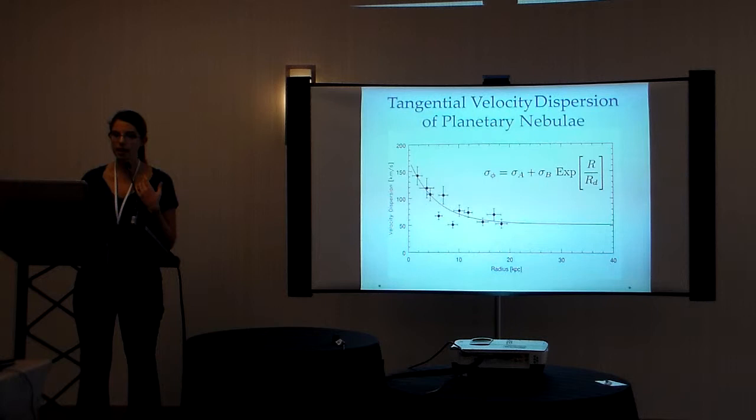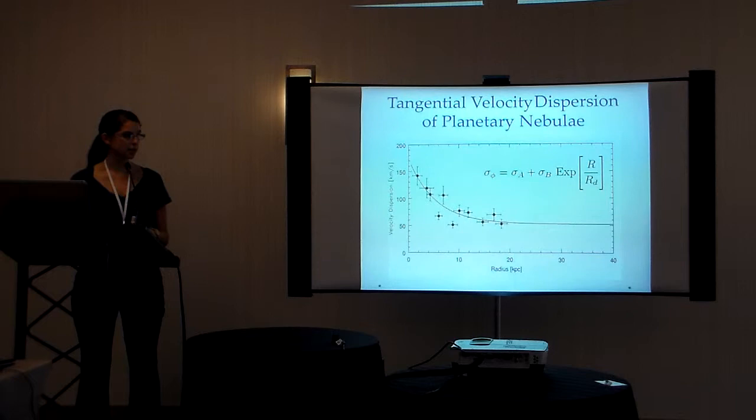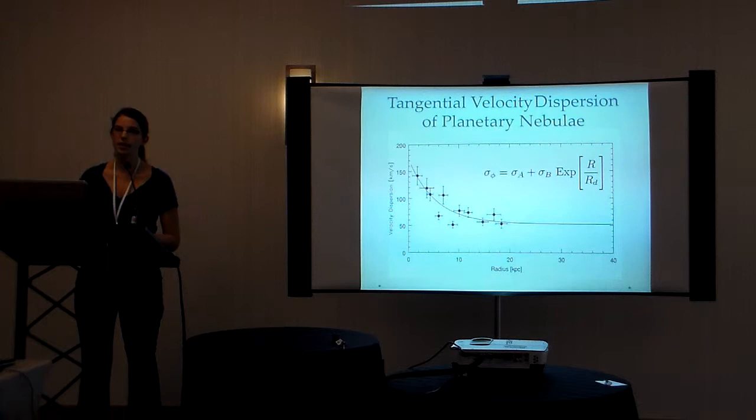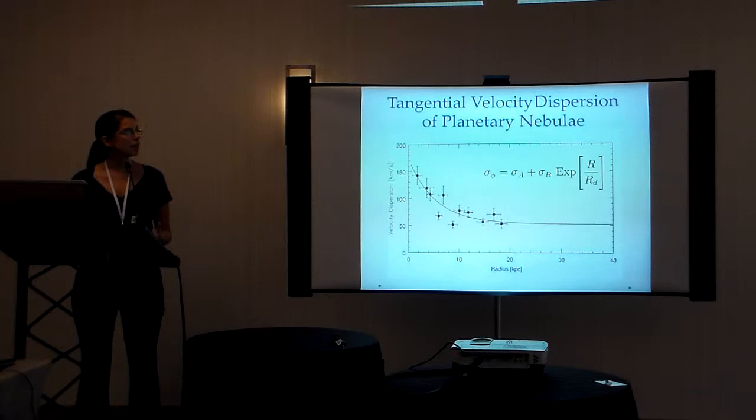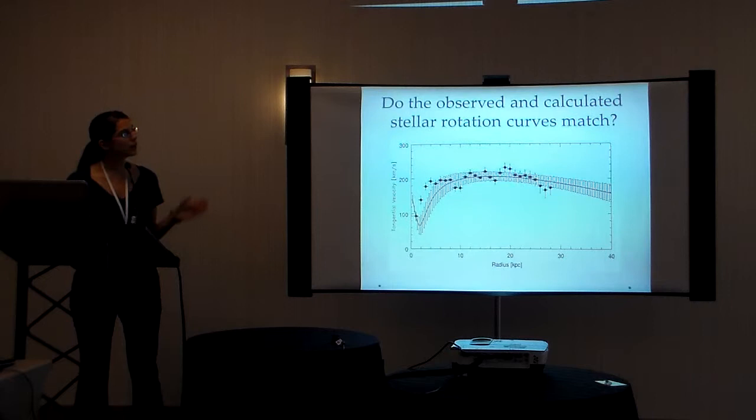So with this tangential velocity dispersion profile, and the number density profile of the planetary nebulae, which we similarly calculated from the velocity field, and the H1 rotation curve, we can now calculate the expected rotation curve for the planetary nebulae, taking into account the effects of asymmetric drift, which I've shown on this slide.